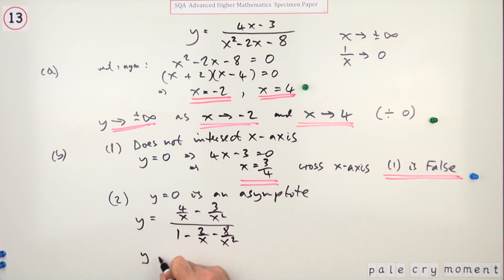So that means y would tend to—that will go to zero, that will go to zero or tend to zero, that stays at 1 minus zero minus zero, which means y tends to zero over 1. So y equals zero is an asymptote.